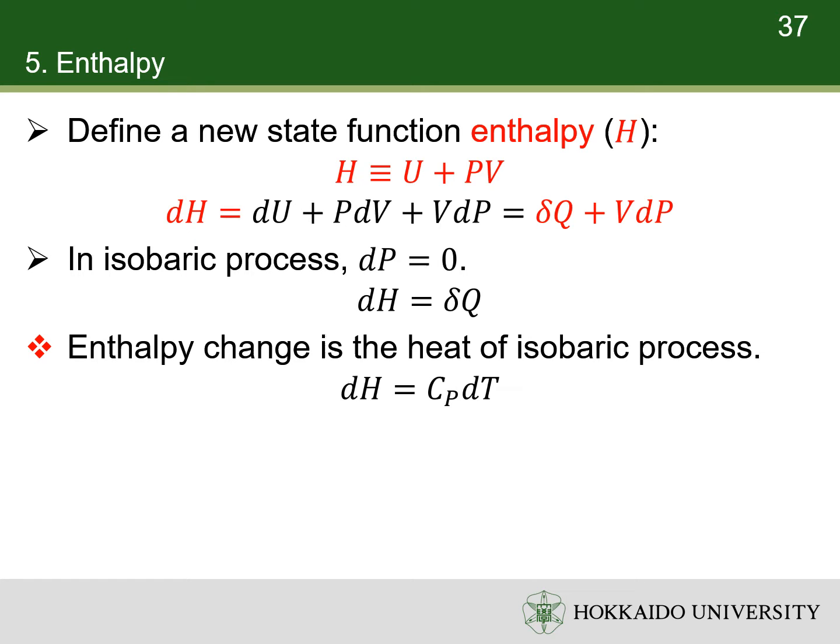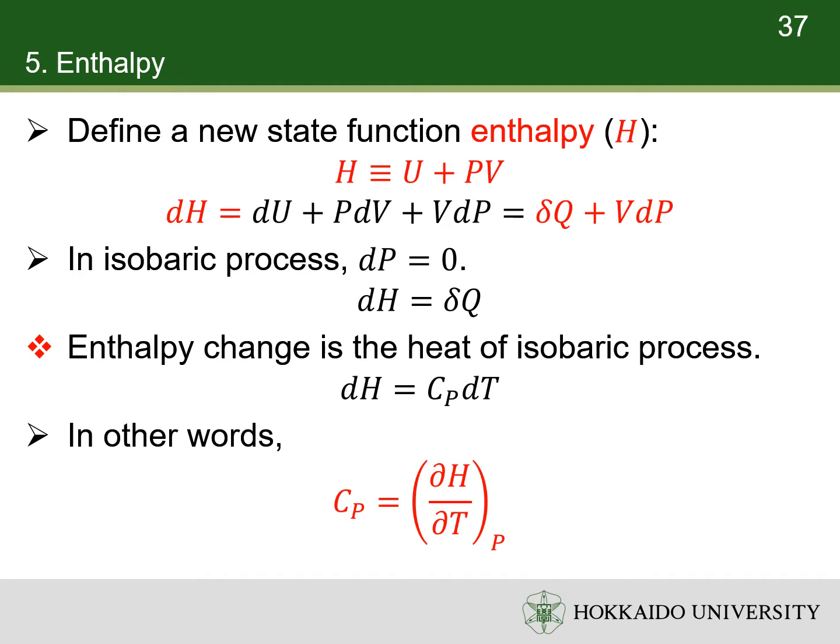Heat in an isobaric process can also be expressed in terms of heat capacity at constant pressure. In other words, the heat capacity at constant pressure is the partial derivative of enthalpy with respect to temperature with pressure held constant.